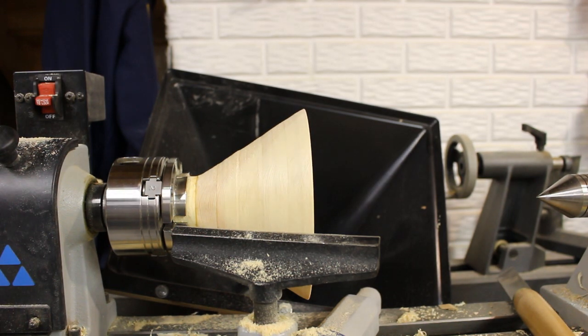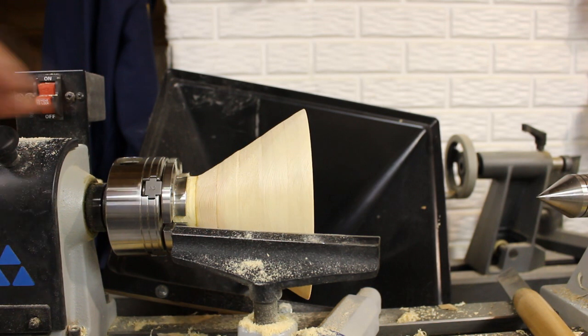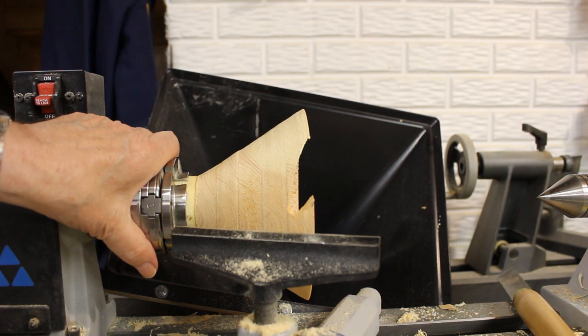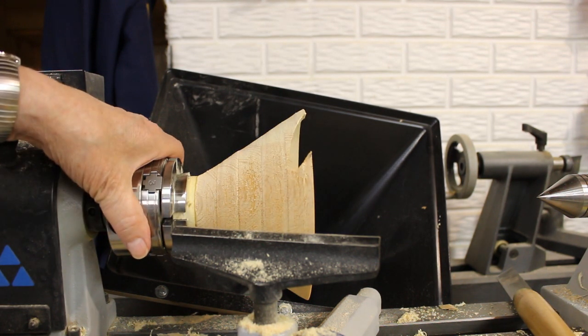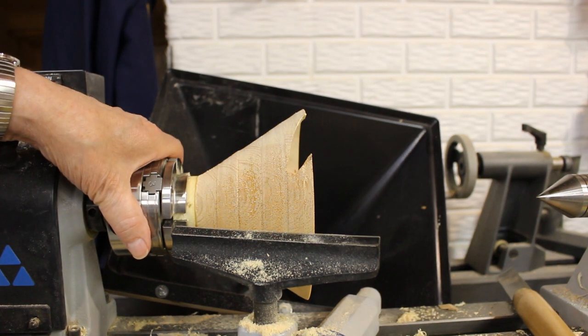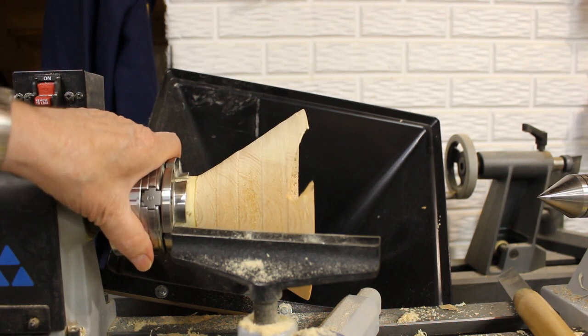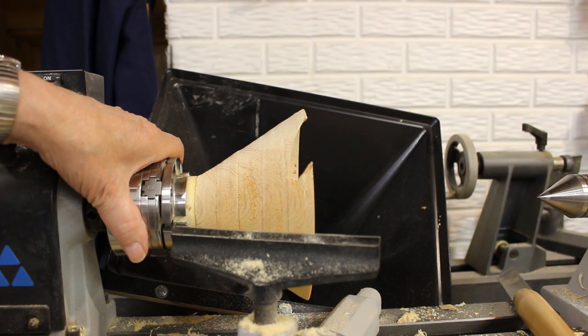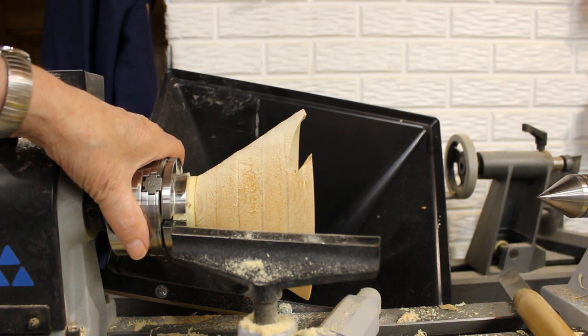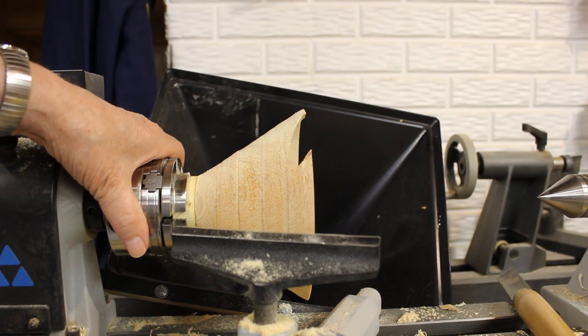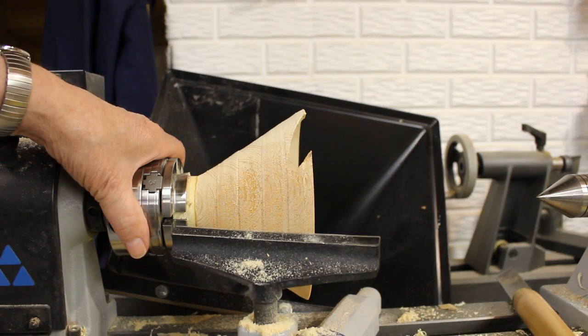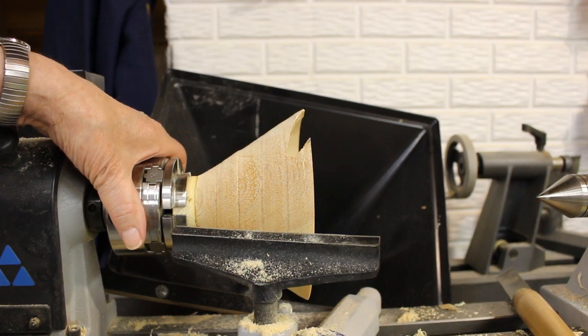So here I am at my lathe just going along proud of myself and then I catch the gouge on the piece. And this is what happens when you catch a gouge. And I've never claimed to be a good worker on the lathe but this is what happened. So now since I can't find my piece of wood this bowl is going to be a little bit shorter. So I'll do a little more and I'll be back.